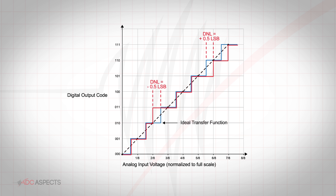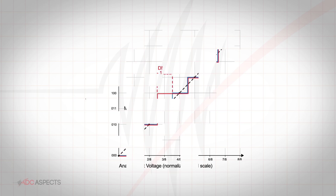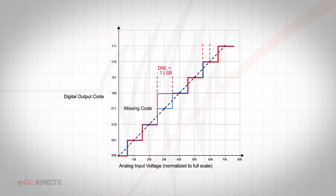It is important for the DNL error to be less than 1 LSB in magnitude to guarantee no missing codes. Missing codes are output digital codes that are not produced for any input voltage due to large DNL error. The figure on screen shows code 011 missing in such a case. Some datasheets, such as those for Delta Sigma converters, may not list a DNL specification, but will state whether or not the converter has no missing codes.